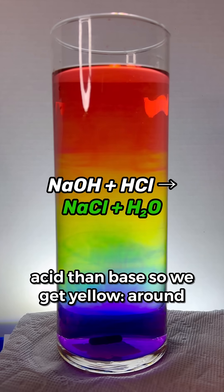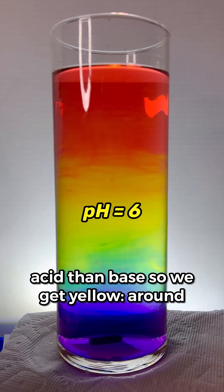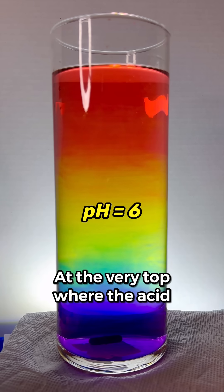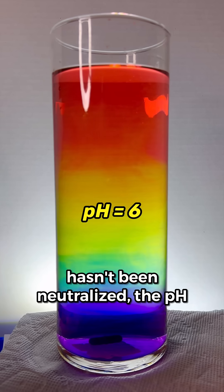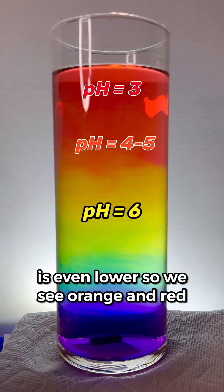Just above that, we get slightly more acid than base, so we get yellow, around pH 6. At the very top, where the acid hasn't been neutralized, the pH is even lower, so we see orange and red.